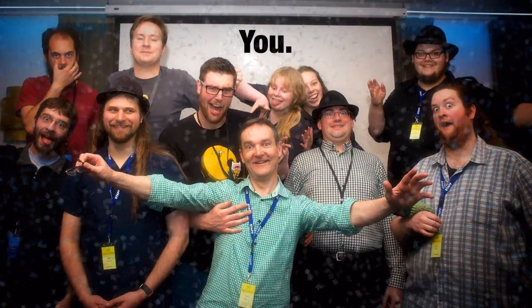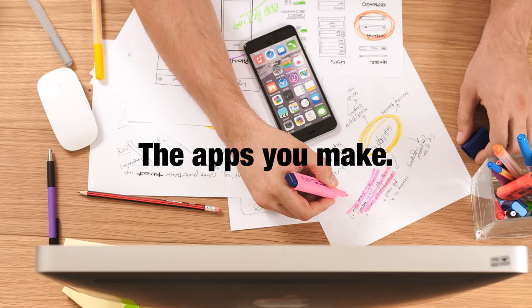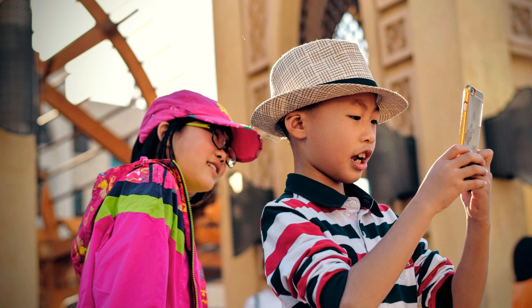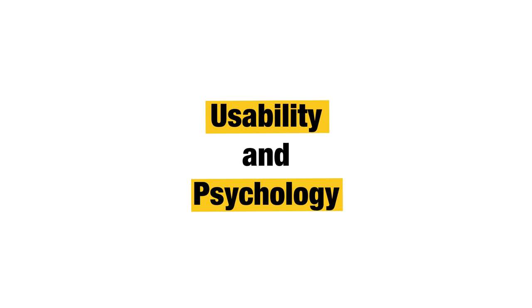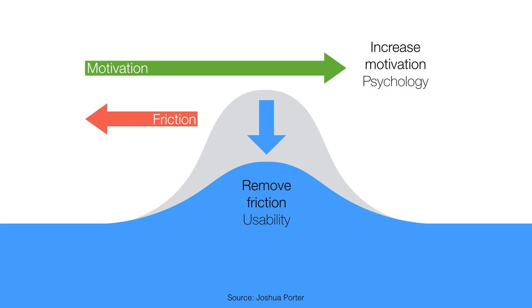That's enough about me — let's talk about you and the apps that you make. I want to talk about how to design engaging and motivating apps. There's a little bit of a formula: focus on two things — usability and psychology. Good usability encourages people to use our apps in the first place and provides utility. But to keep people using our apps, we can look at motivational psychology and see how to apply it to app design.